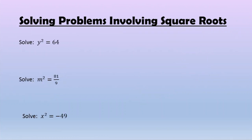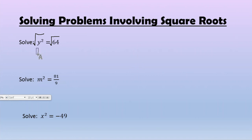Now let's take a look at a couple other problems involving square roots. We're solving y squared equals 64 for the first one. The minute I see the exponent is 2, I know I'm dealing with a quadratic equation. I'm going to square root both sides just like we did on our previous problem. I'm going to find that y equals positive and negative 8. There are no restrictions on this one since we're not dealing with dimensions or things like that.